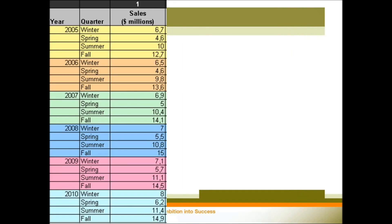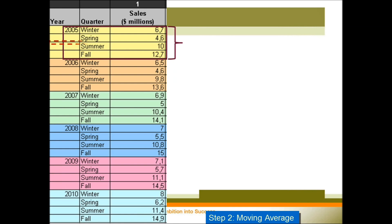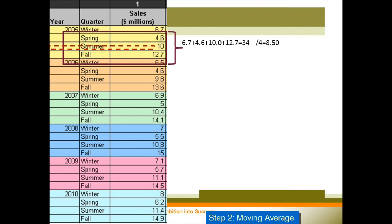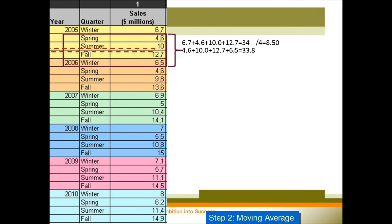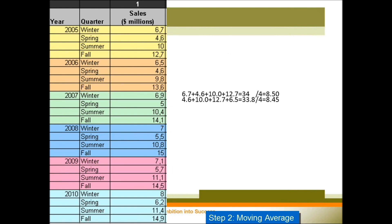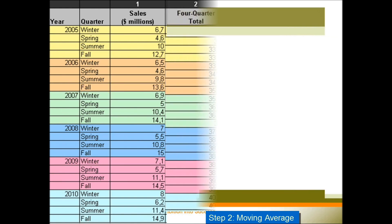The second step is to calculate the moving average, and you need to put your moving average in between the four seasons. So the first moving average comes from winter plus spring plus summer plus fall, divided by four. You put the number 8.50 between spring and summer, and you do it cell by cell. All the moving averages should be placed between four seasons.